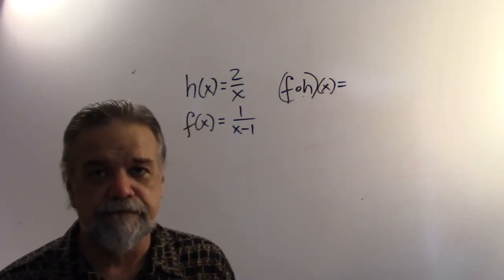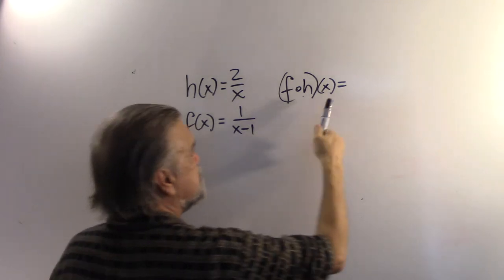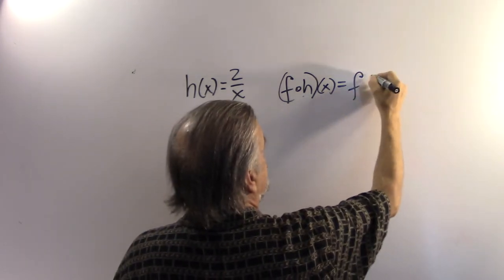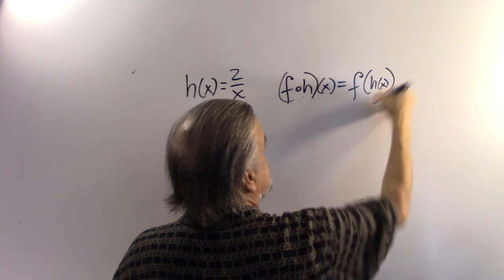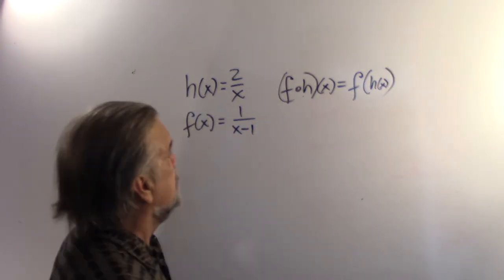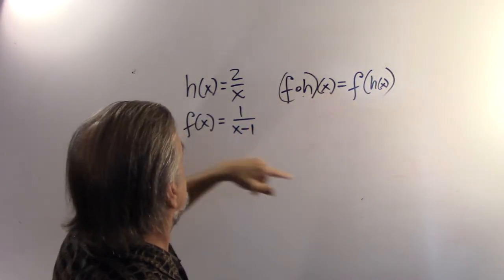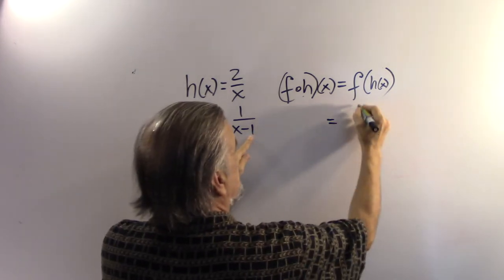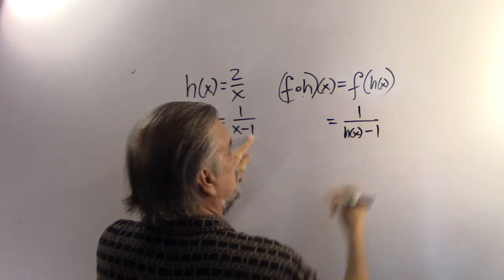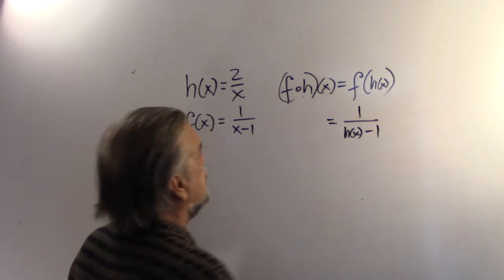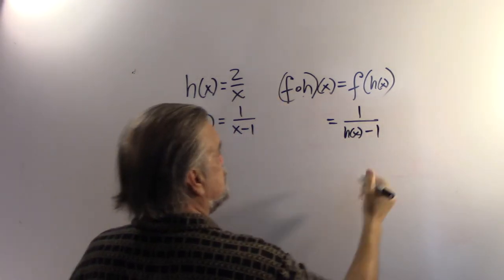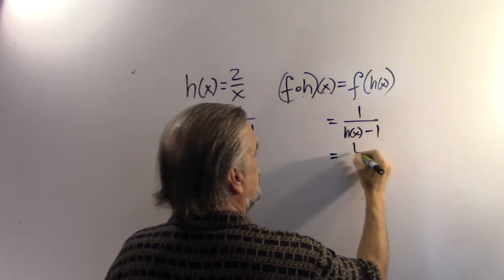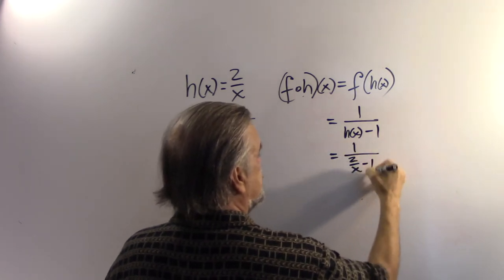So f of h of x, and remember that's the same thing as f of h of x. What does the f function do to things? It puts 1 over that thing minus 1. So this is going to be 1 over h of x minus 1. And h of x is, of course, 2 over x. This is 1 over 2 over x minus 1.